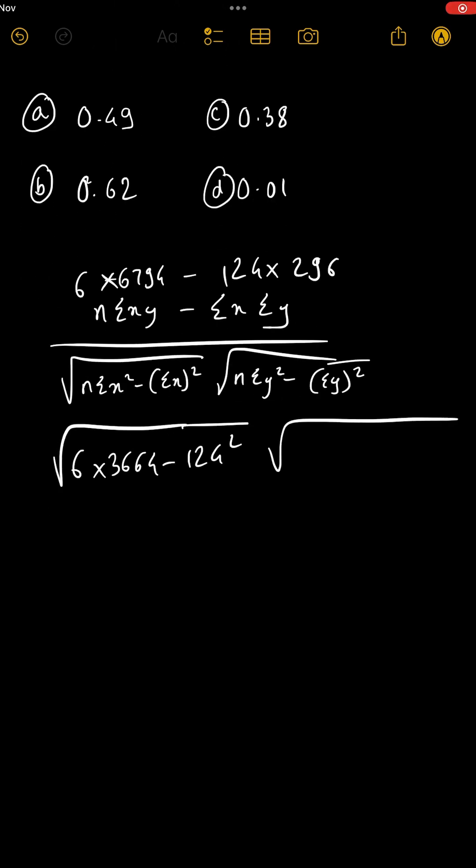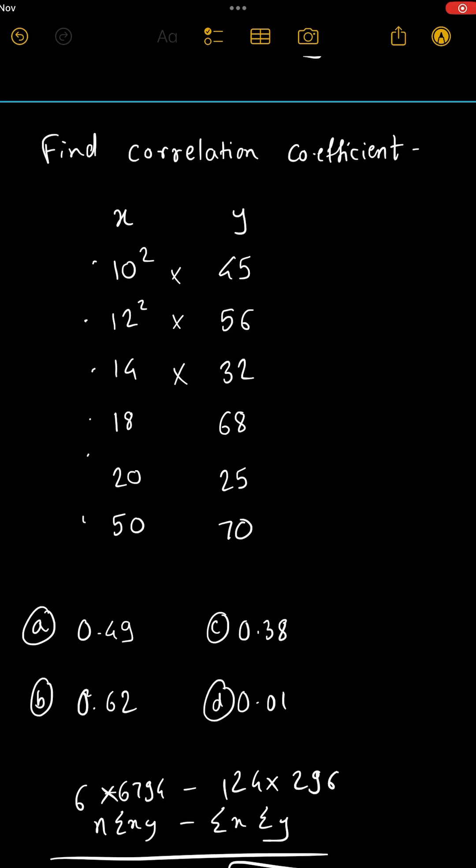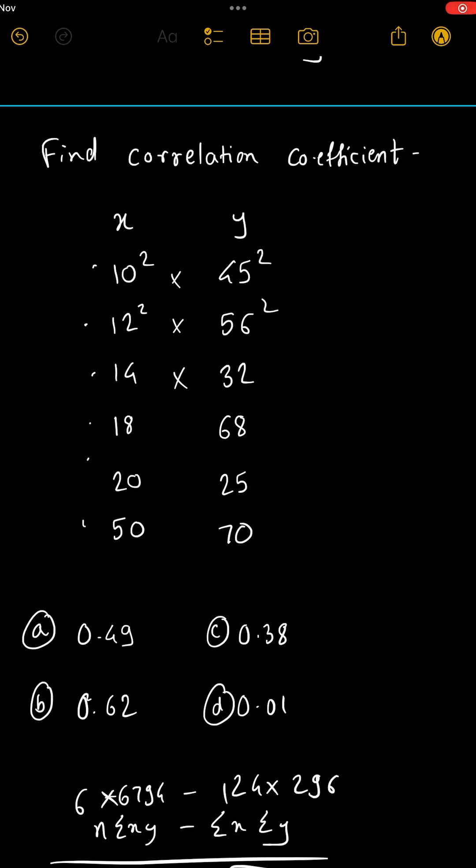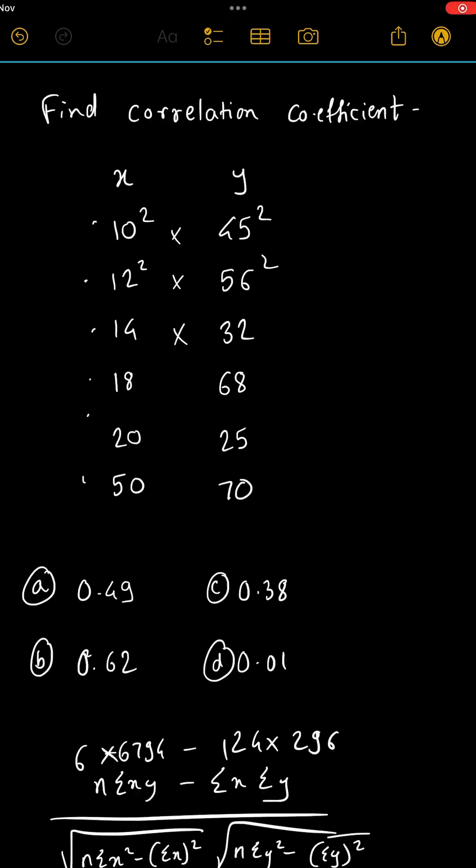And in another bracket, 6 into summation y square, that is 45 square, 56 square and so on. Try to do it on your calculator, check if you get 16334.